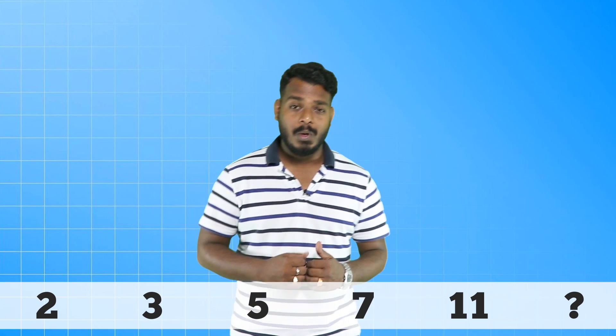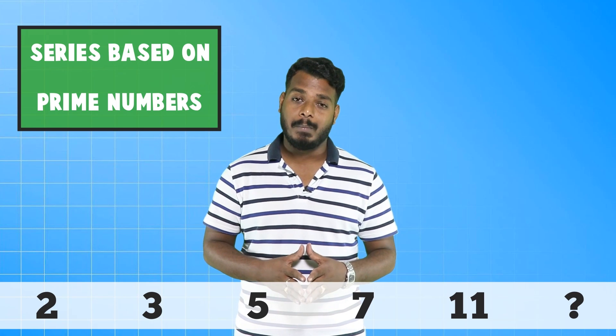That was all about questions on difference, multiples, squares and cubes. Now have a look at this series: 2, 3, 5, 7, 11, question mark. What are these numbers? Can you see a property common to them? Yes, all of them are prime numbers. So this series is based on a property of numbers — that is prime numbers. There can be some more variety of questions like this.